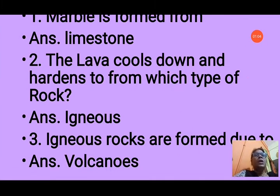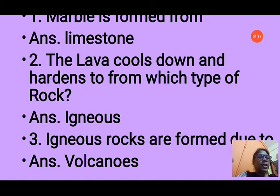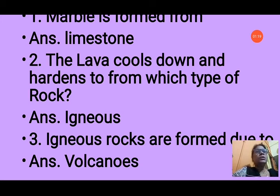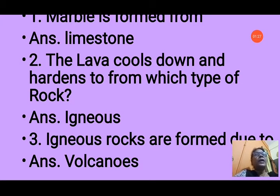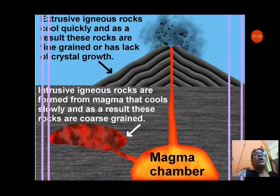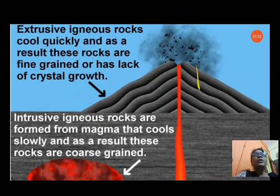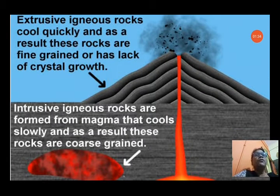Question 3: Igneous rocks are formed due to? Options: A. earthquakes, B. volcanoes, C. tides, D. storm. Igneous rocks are formed due to fire from volcanoes, so the answer is B, volcanoes. You can see here how igneous rock is formed — the volcano is shown, and inside, magma cools down to form igneous rocks.